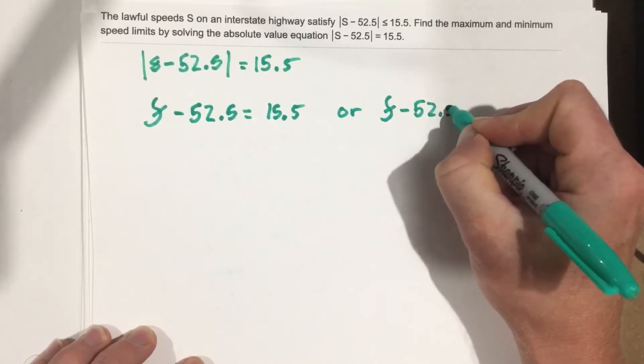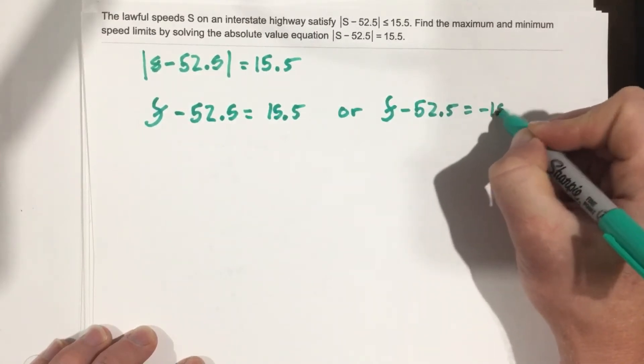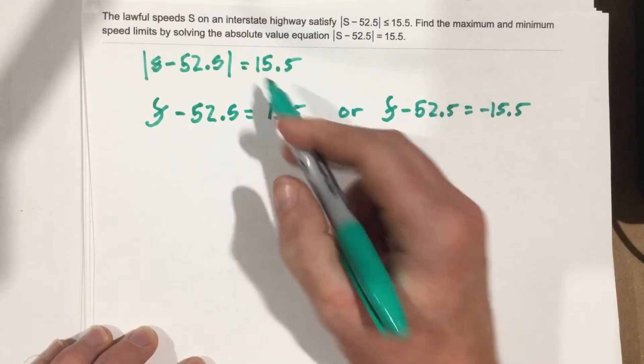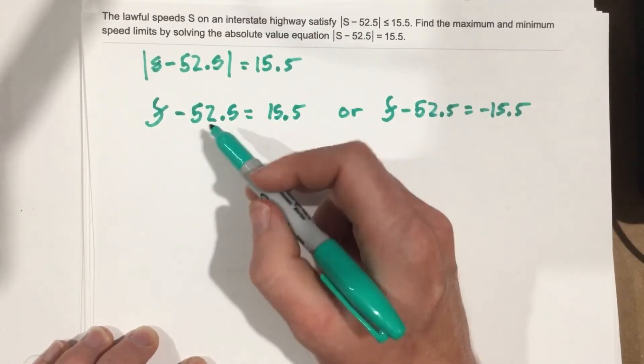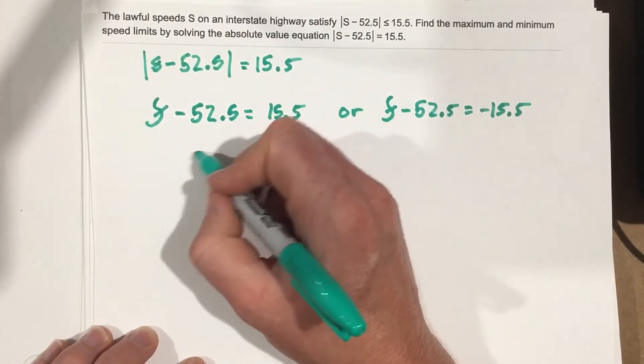52.5 equals negative 15.5. Just set it equal to the positive and negative version of that. Let's add 52.5 over, so